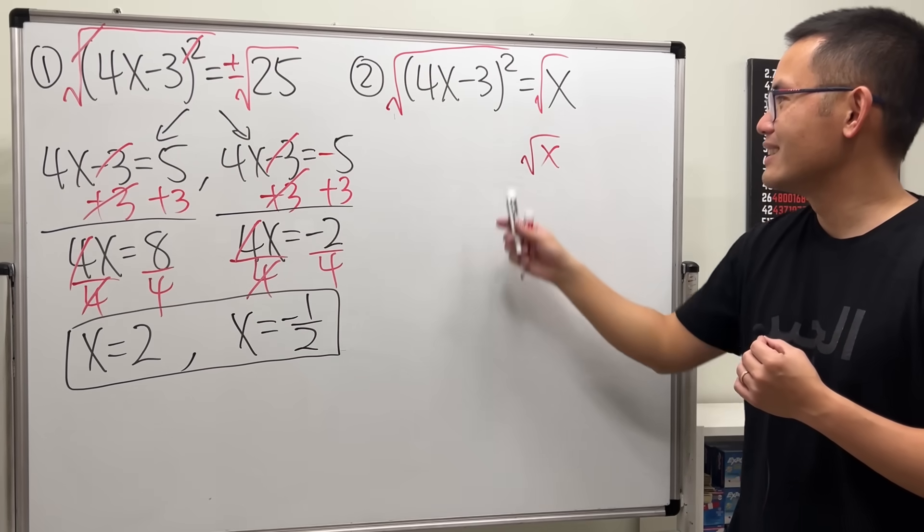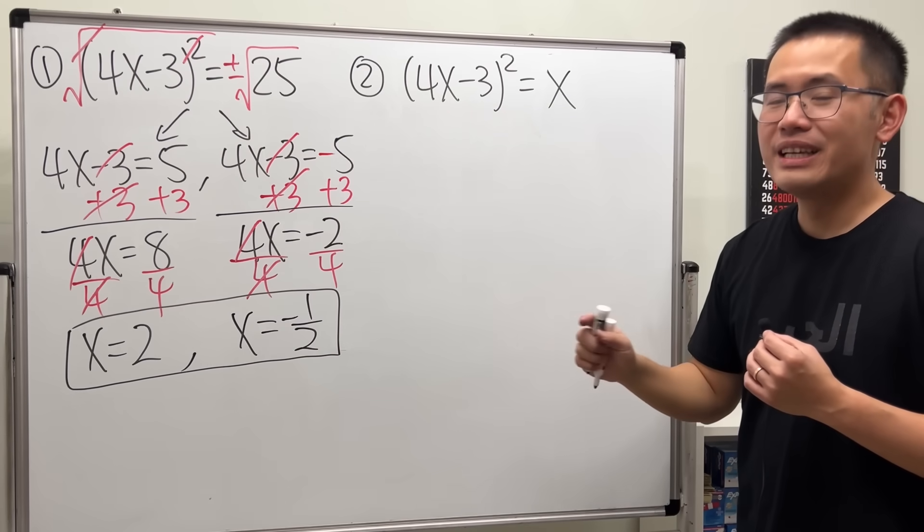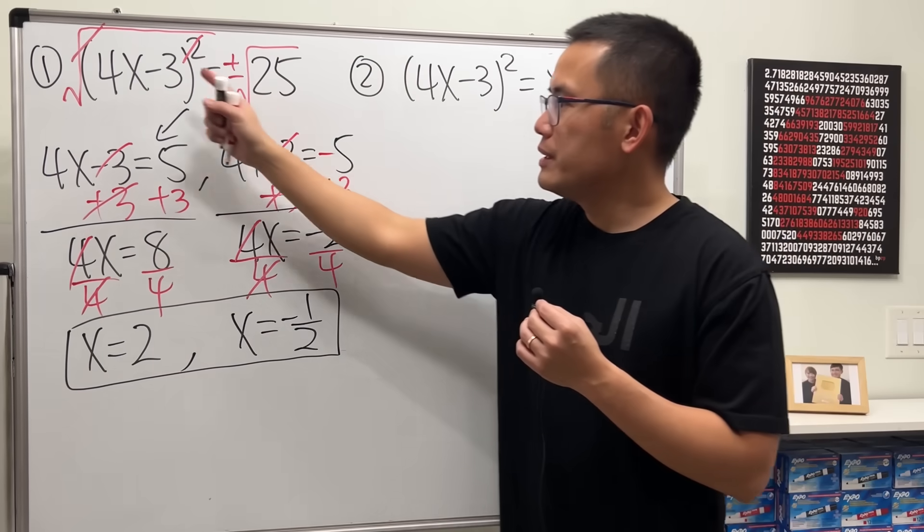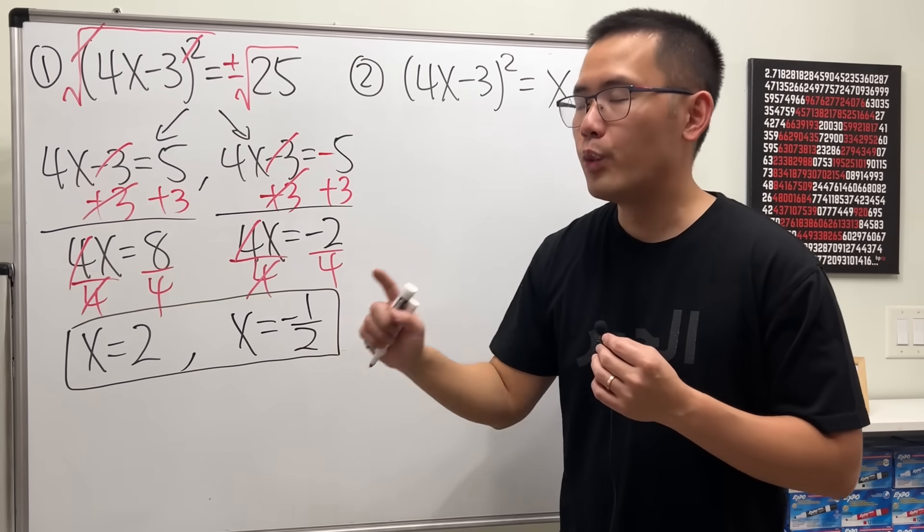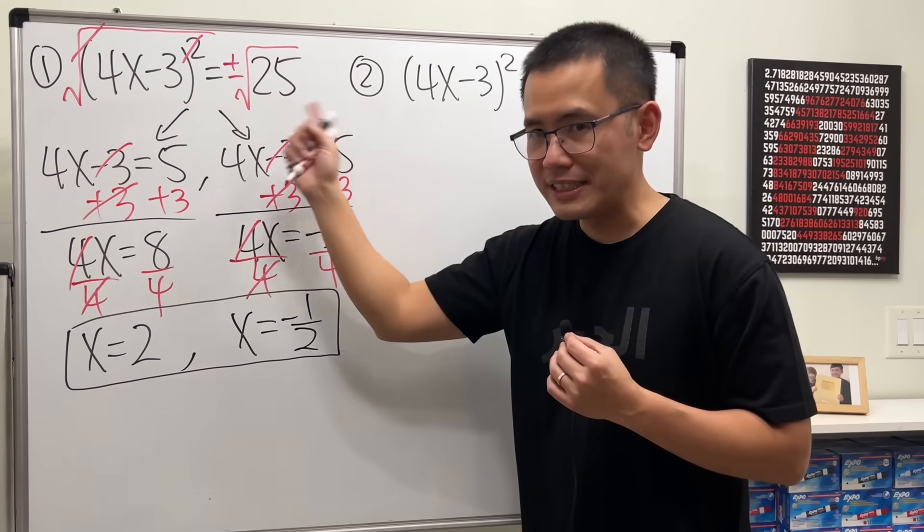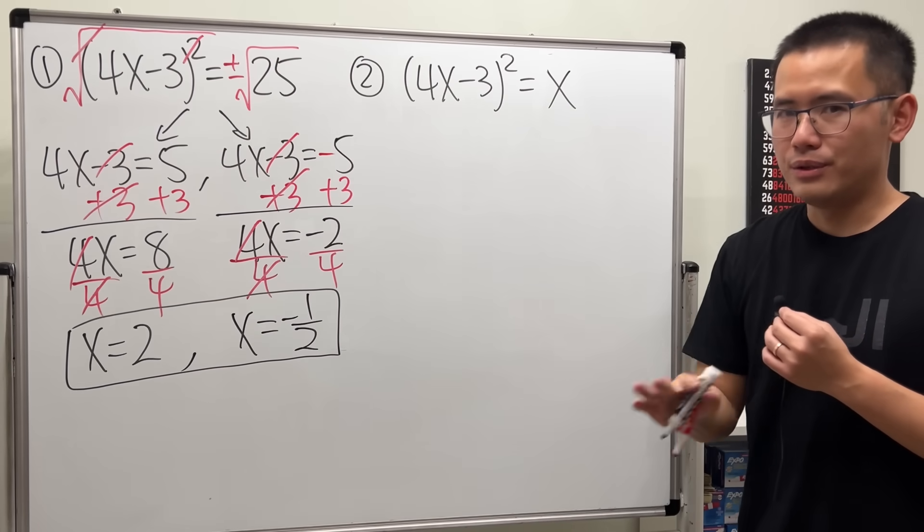No, that's not what we want. So don't do that. Here, we can only take the square root on both sides when we have a number on one side. But if you have x on both sides, then no.